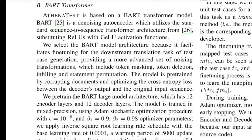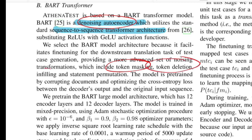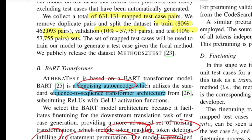BART is a denoising autoencoder utilizing a sequence-to-sequence transformer architecture. It uses transformation functions that corrupt a given input — such as masking a token, deleting a token, inserting tokens, or shuffling tokens — and the model is trained to reconstruct the original output. The model is trained against cross-entropy loss, maximizing the likelihood of the original input sequence.